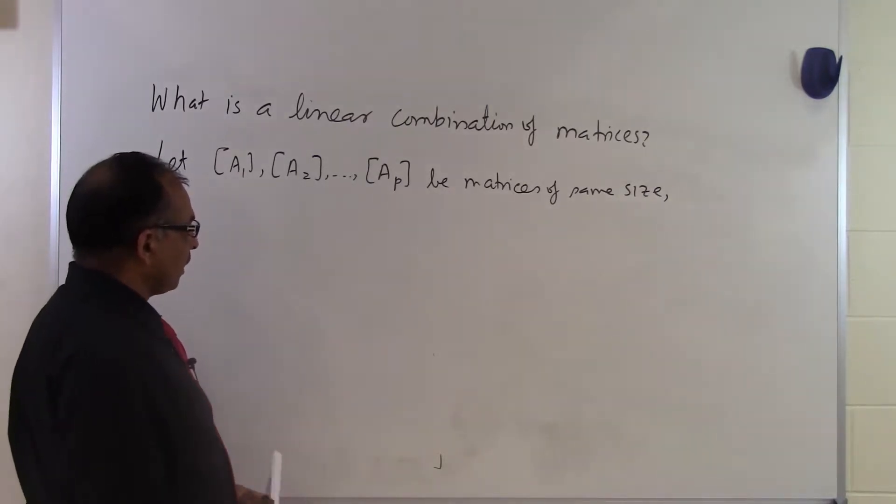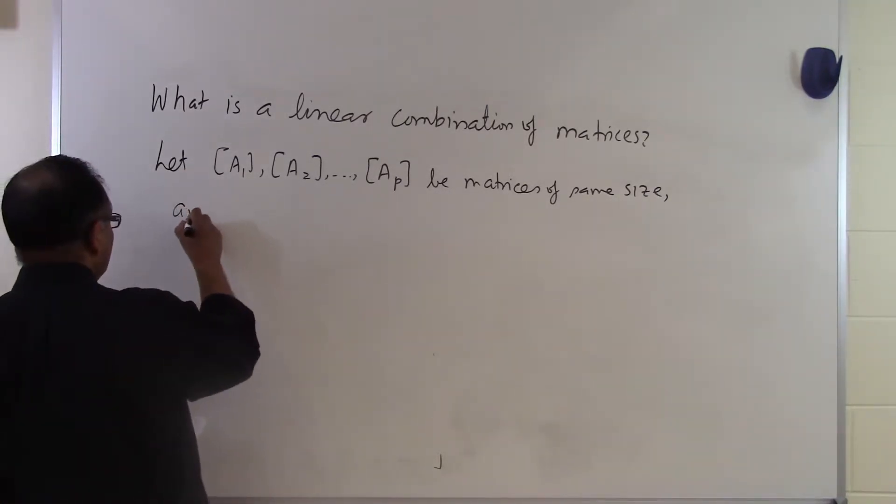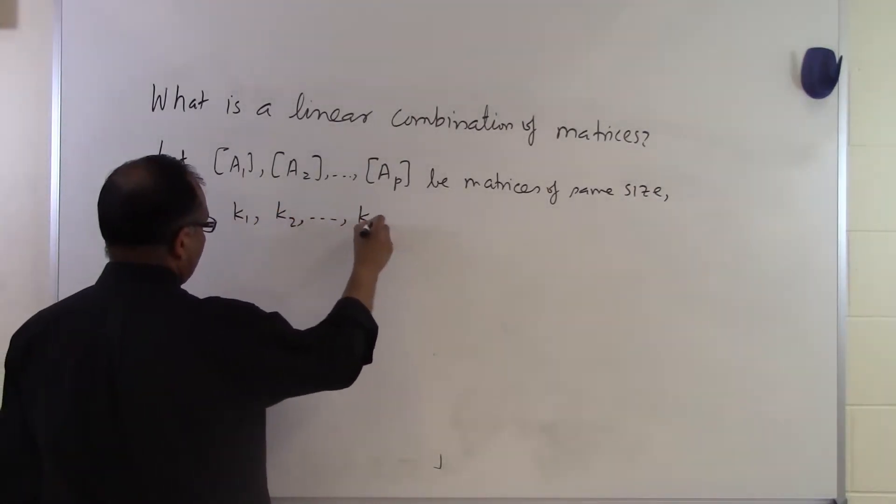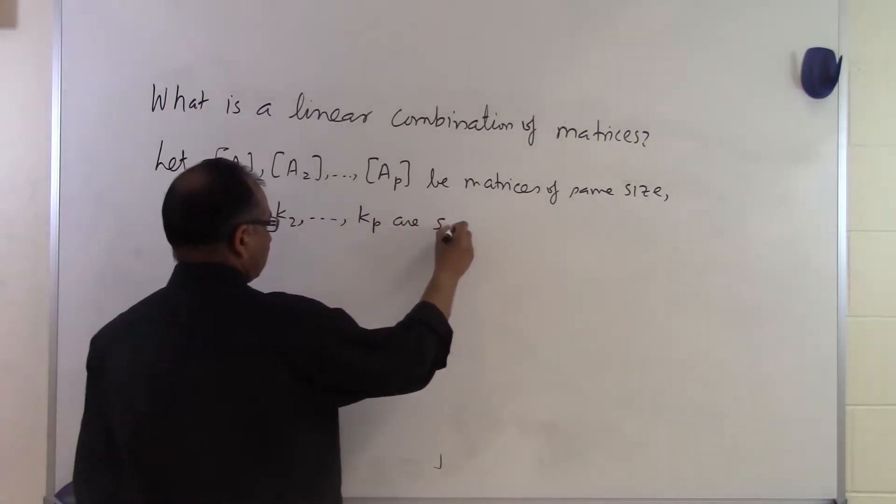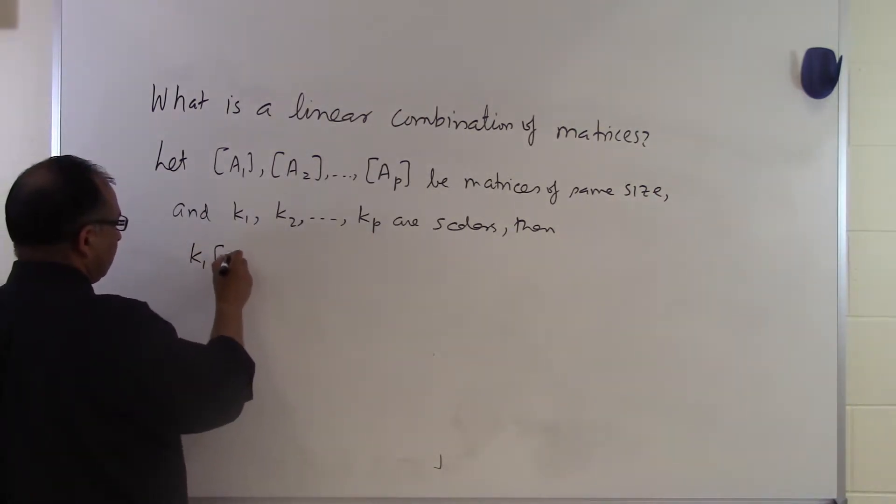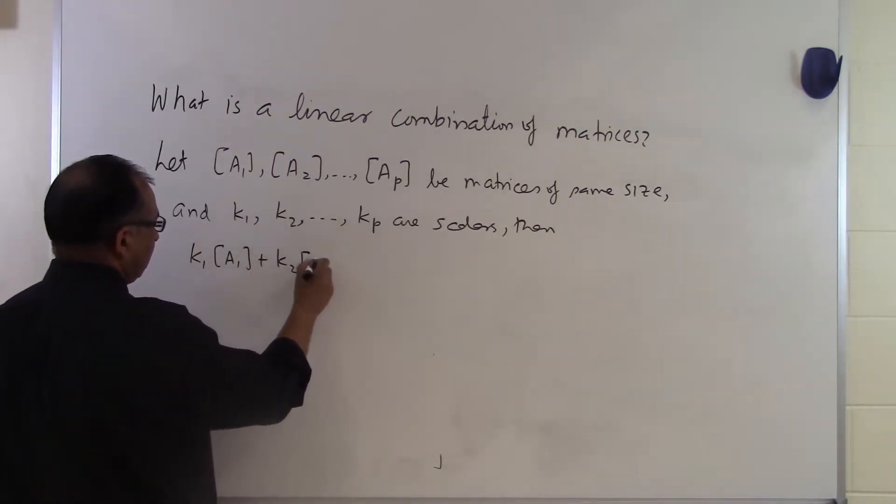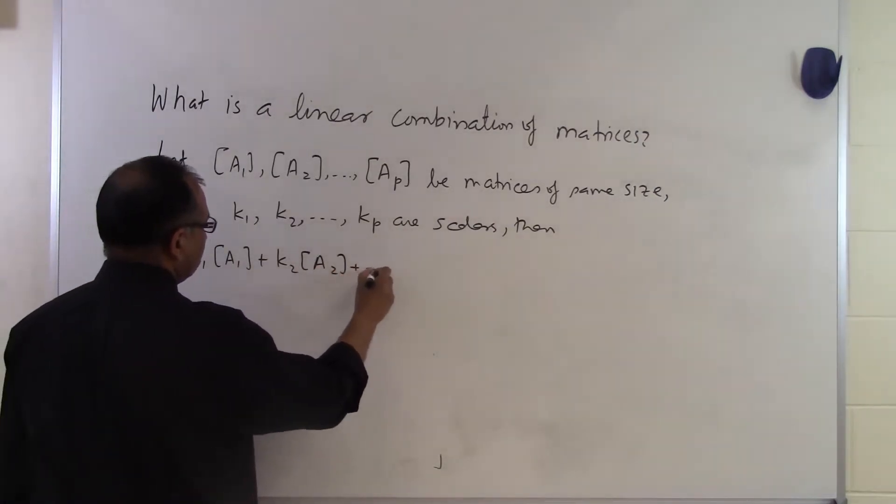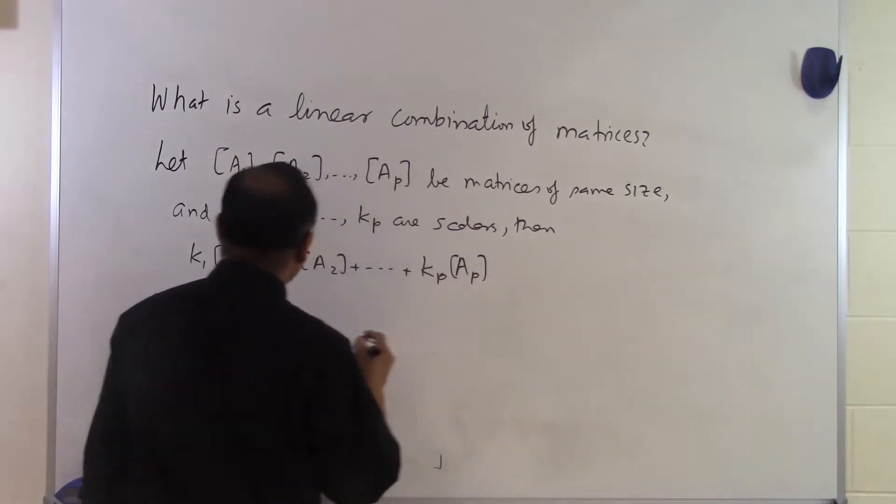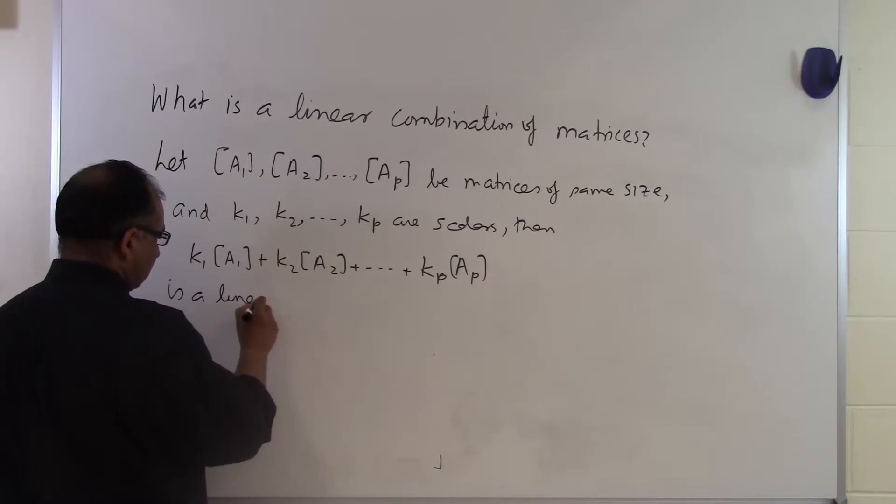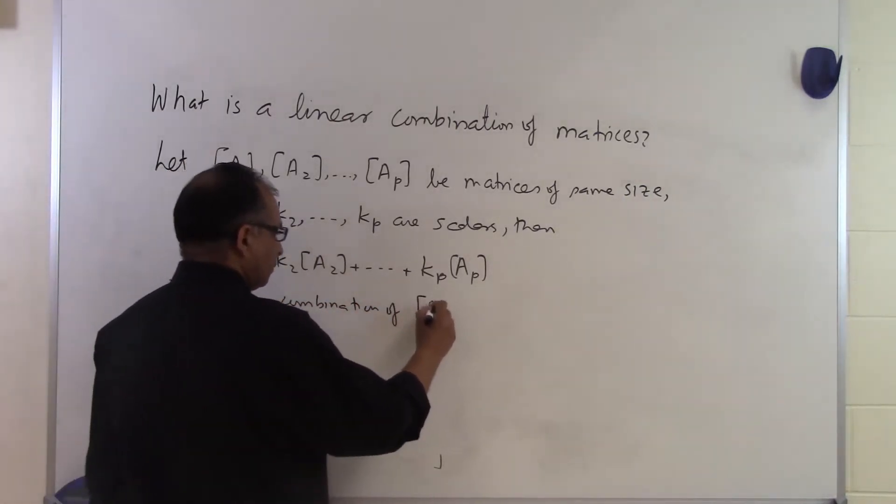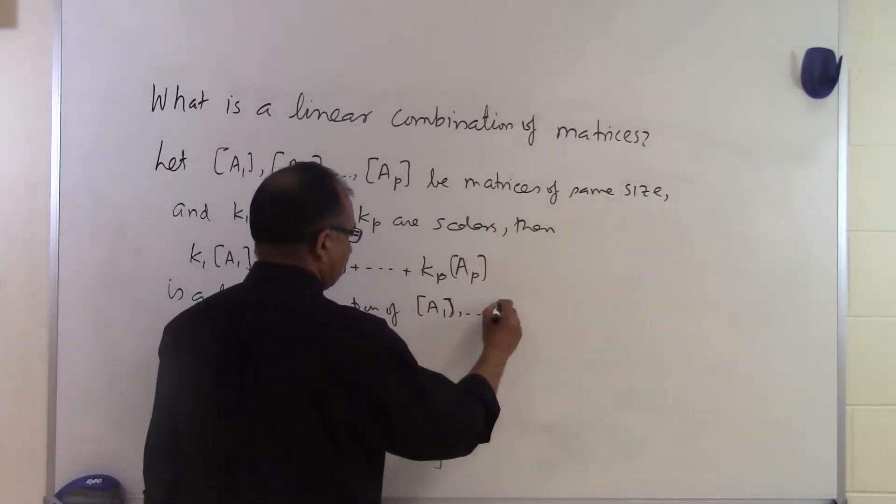And let's suppose K1, K2, all the way up to Kp are scalars. Then K1 times A1 plus K2 times A2 plus all the way up to Kp times AP is a linear combination. It's a linear combination of these matrices A1 all the way up to AP.